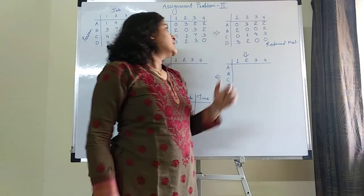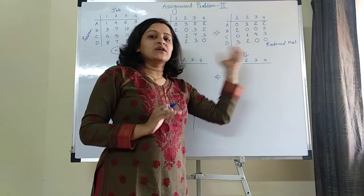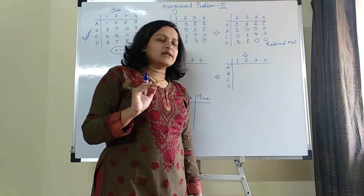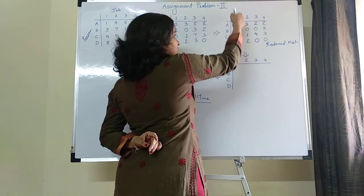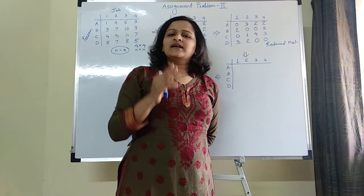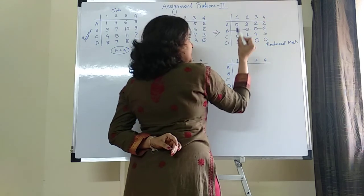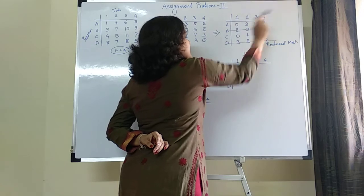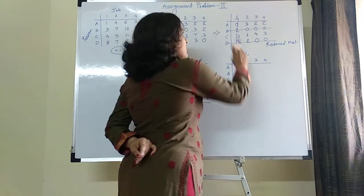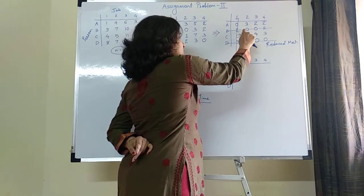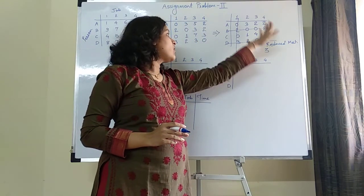Next, draw the minimum number of lines to cover all the zeros in the matrix. Those lines can be vertical or horizontal. Checking row-wise and column-wise, there are a maximum of 2 zeros in any row or column. We need 3 lines to cover all the zeros. You require a minimum of 3 lines to cover all the zeros in this matrix.